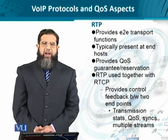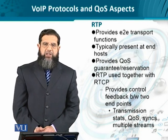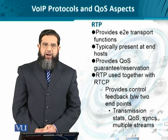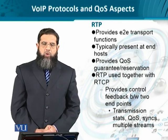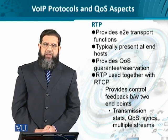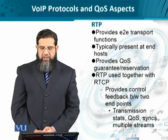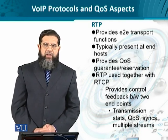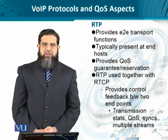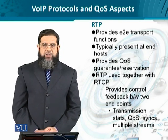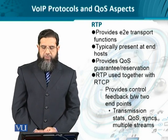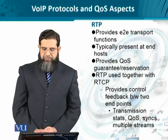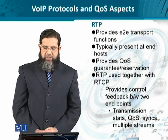RTP essentially provides the end-to-end transport functionality. Since it is an end-to-end phenomenon, it is available at the end host. The primary responsibility of RTP is to provide QoS-related guarantees — that means meeting the service level agreement between the service provider and the end user in terms of QoS. This involves some kind of provisioning, feedback, monitoring, and tweaking, or modification. QoS guarantees and reservations are part of RTP's functionality.